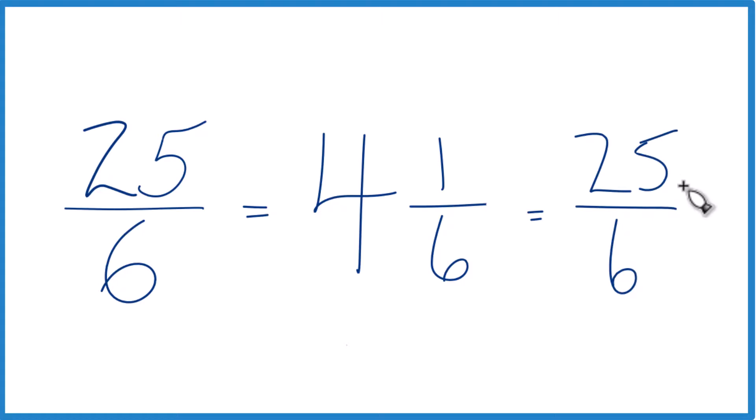And it's what we started with. So that's it. That's how you convert 25/6, this improper fraction here, to a mixed number. The answer, 4 and 1 sixth.